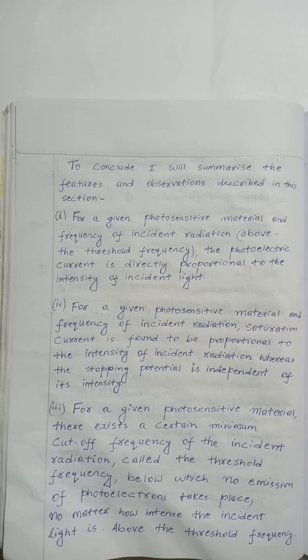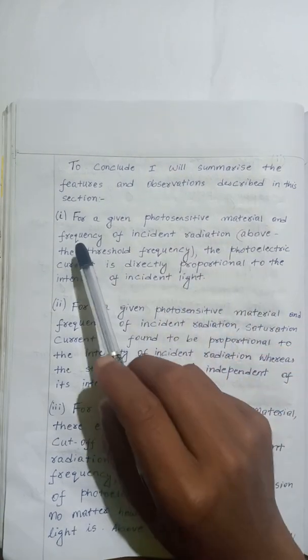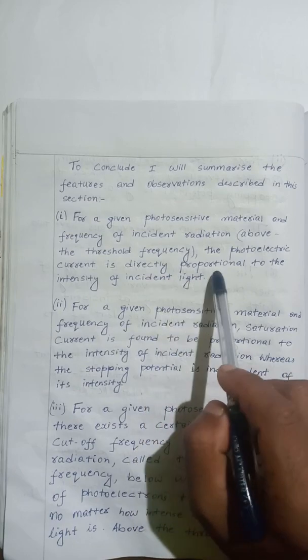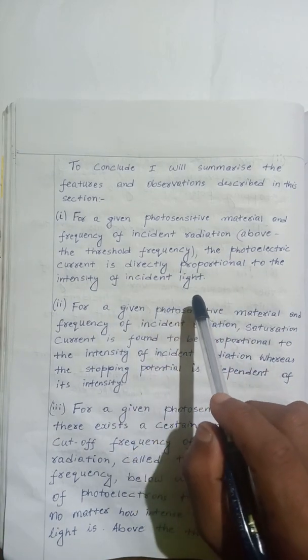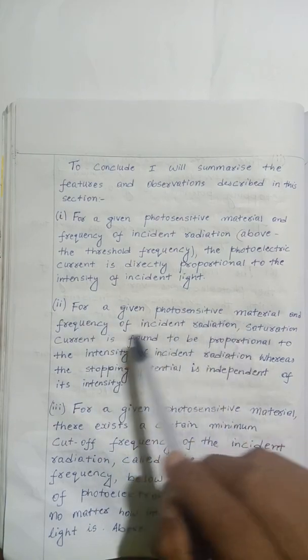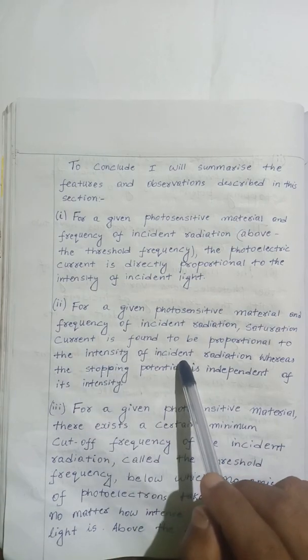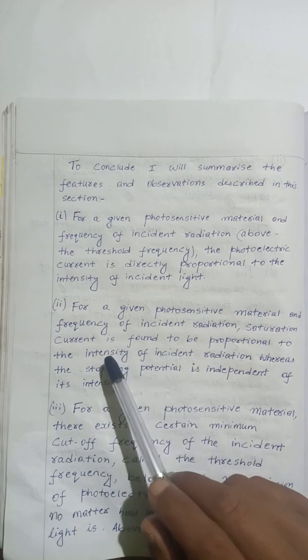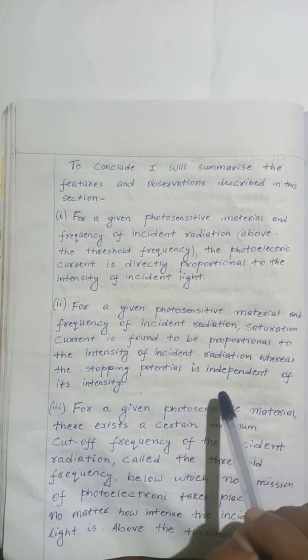To conclude, I will summarize the features and observations — the factors on which photoelectric emission depends. For a given photosensitive material and frequency of incident radiation above the threshold frequency, the photoelectric current is directly proportional to the intensity of incident light. For a given photosensitive material and frequency of incident radiation, saturation current is found to be proportional to the intensity of incident radiation, whereas the stopping potential is independent of its intensity.